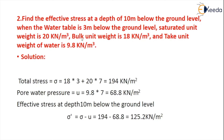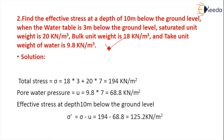Find the effective stress at a depth of 10 meters below the ground level when the water table is 3 meters below the ground level. The saturated unit weight is given as 20 kN per meter cube, bulk unit weight is 18 kN per meter cube, and the unit weight of water is 9.8 kN per meter cube.